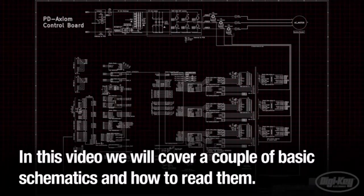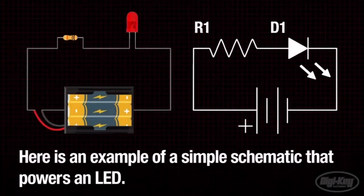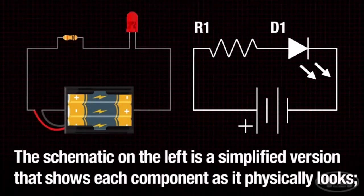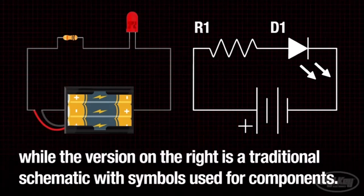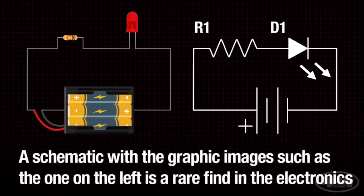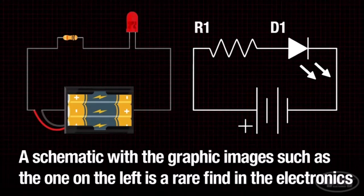video we will cover a couple of basic schematics and learn how to read them. Here is an example of a simple schematic that powers an LED. The schematic on the left is a simplified version that shows each component as it physically looks, while the version on the right is a traditional schematic with symbols used for the components. A schematic with graphic images such as the one on the left is a rare find in the electronics world